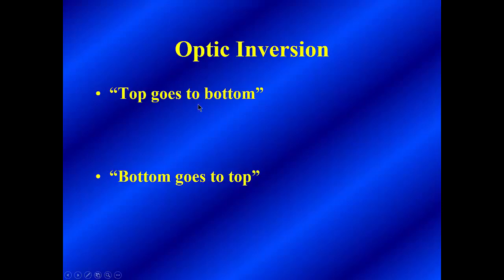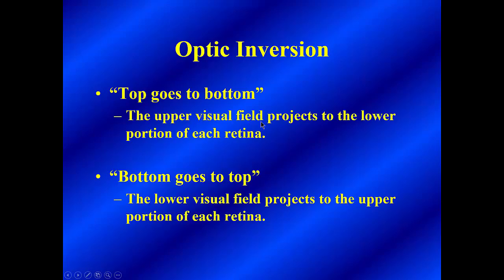The optic inversion similarly holds for the top and bottom, or vertical axis. Top goes to bottom, bottom goes to top. The upper visual field projects to the lower portion of each retina, and conversely, the lower visual field projects to the upper portion of each retina. So if we're focusing here, something that's all the way down here is going to be projecting to a relatively upper portion of each retina, and something that's way up here is going to be projecting to a lower portion of each retina.